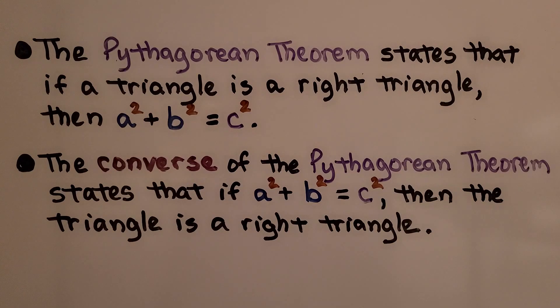The Pythagorean Theorem states that if a triangle is a right triangle, then a squared plus b squared equals c squared. The converse of the Pythagorean Theorem states if a squared plus b squared equals c squared, then the triangle is a right triangle.